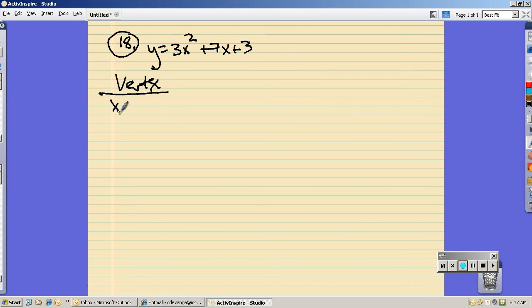I know that the x part of the vertex is negative b over 2a. So, negative 7 over 2 times 3. Negative 7 sixths. There's nothing pretty about that.